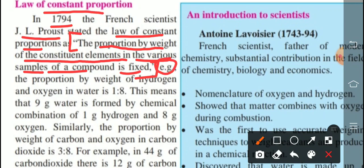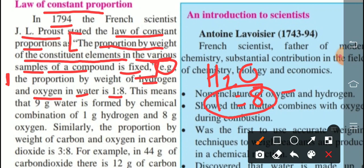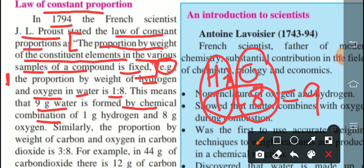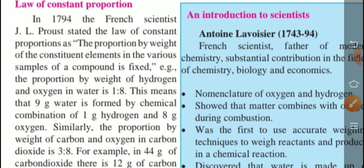Two examples are given. First example: the proportion by weight of hydrogen and oxygen in water (H₂O) is 1:8. This means 9 grams of water is formed by the chemical combination of 1 gram of hydrogen and 8 grams of oxygen. Second example: the proportion by weight of carbon and oxygen in carbon dioxide (CO₂) is 3:8. In 44 grams of carbon dioxide, there are 12 grams of carbon and 32 grams of oxygen.